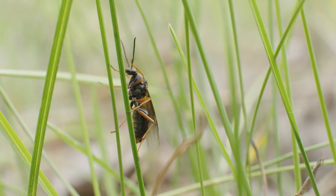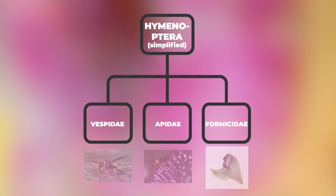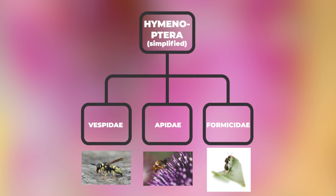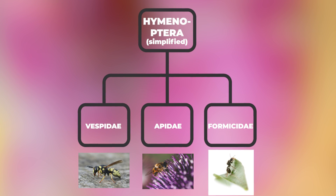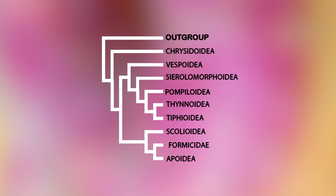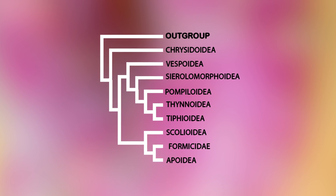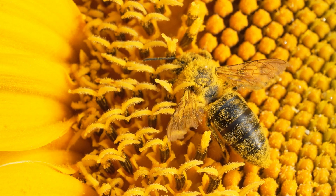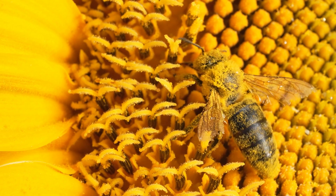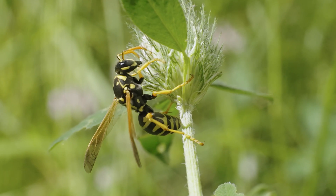Researchers suspect that ants have a common ancestor with a solitary wasp. To understand their connection with wasps and bees, let's look at this graph. As we can see, all bees, wasps, and ants belong to the Hymenoptera group — a certain category of insects. This group is subdivided into many different families. Starting at the bottom with Formicidae — that is the scientific term for ants — they are next to the Apoidea, a group composed of bees and wasps. That puts bees and ants in the same big family; they are close relatives, like cousins.